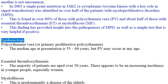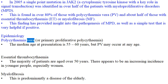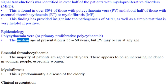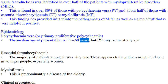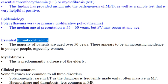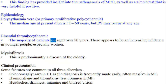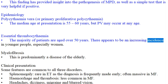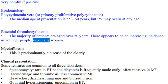Epidemiology: Polycythemia vera, or primary proliferative polycythemia — the median age at presentation is 55–60 years, but PV may occur at any age. Essential thrombocythemia — the majority of patients are aged over 50 years, but there appears to be an increasing incidence in younger people, especially women.